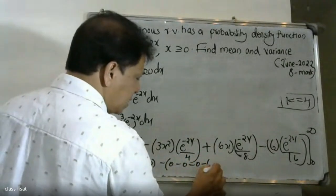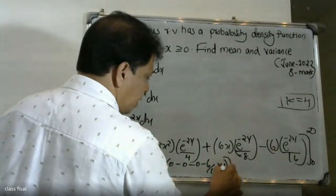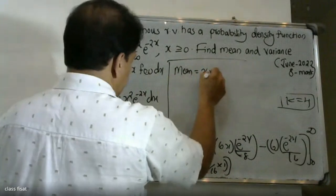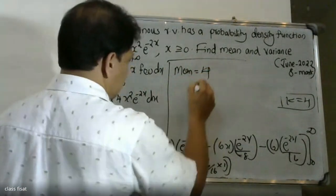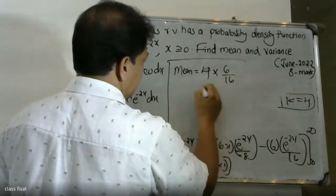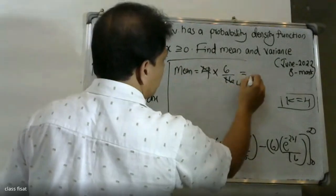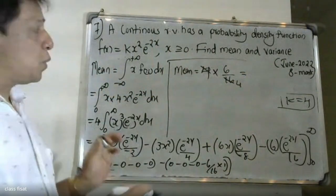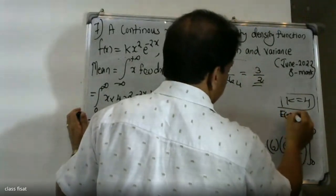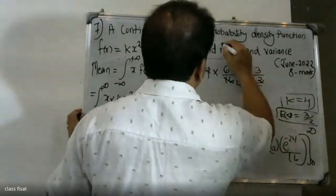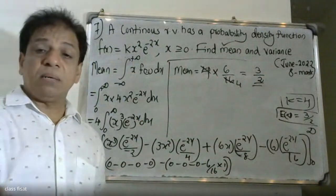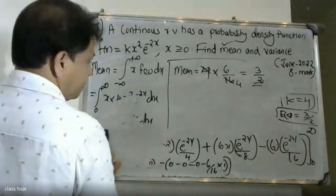Evaluating, the result gives minus 6 divided by 16 into 1, so the mean is equal to 4 times 6 by 16, which is 6 by 4, which simplifies to 3 by 2. The expectation of x is equal to 3 by 2. This is the mean answer.